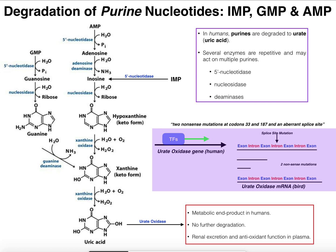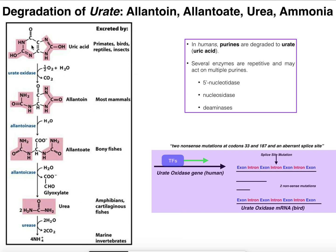So let's talk about, in other organisms that may actually possess the enzyme urate oxidase, how they degrade uric acid further — how they get rid of purines and nitrogen products. We're going to see that other animals may excrete these products as either allantoin, allantoate, urea, or ammonia.